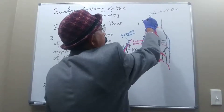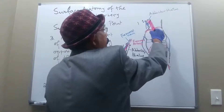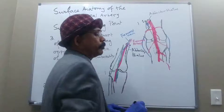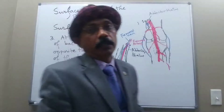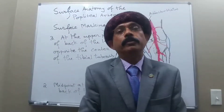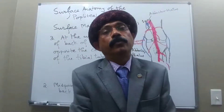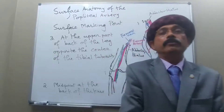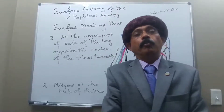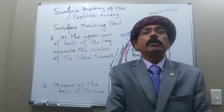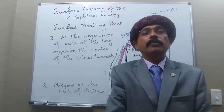If we draw through these three points, we get the popliteal artery. So we have three surface marking points to draw the popliteal artery.